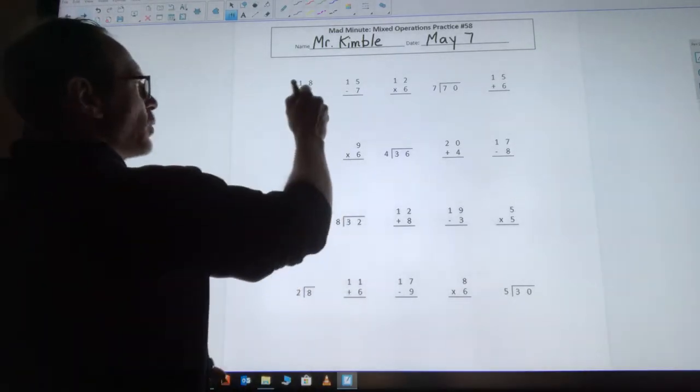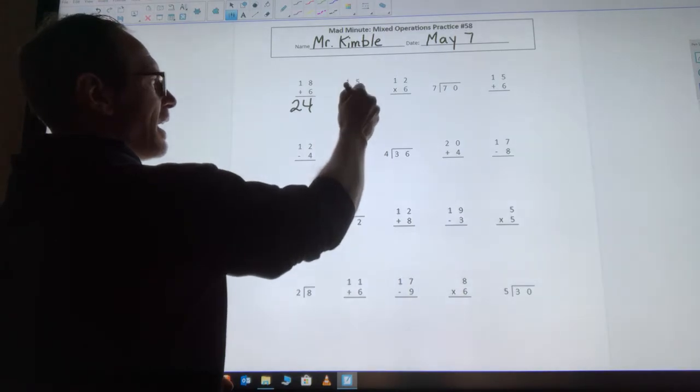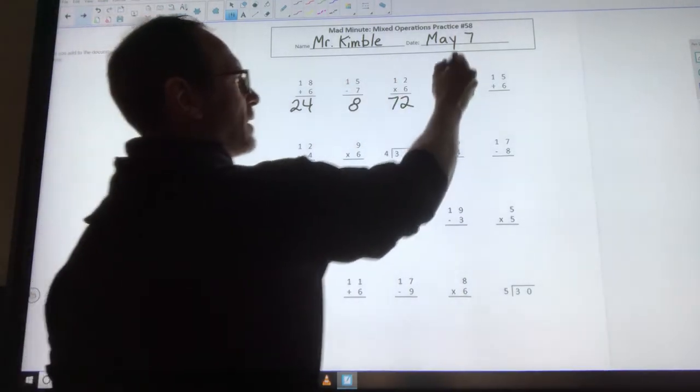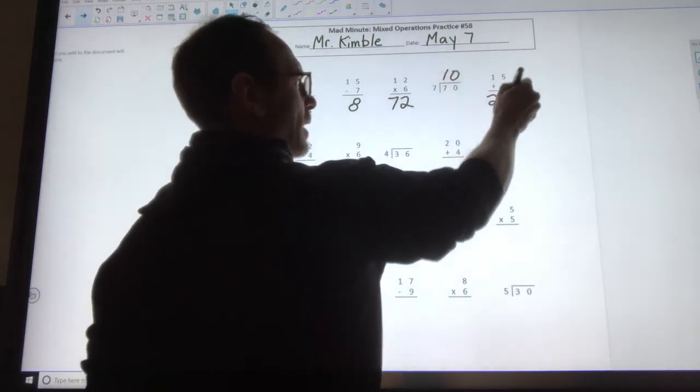18 plus 6 is 24. 15 minus 7 is 8. 12 times 6 is 72. 70 divided by 7 is 10. 15 plus 6 is 21.